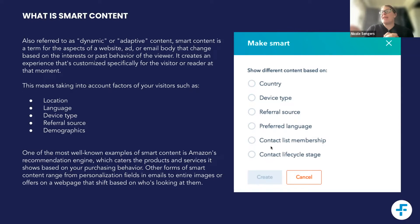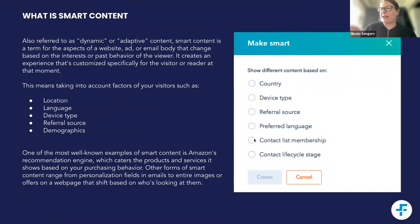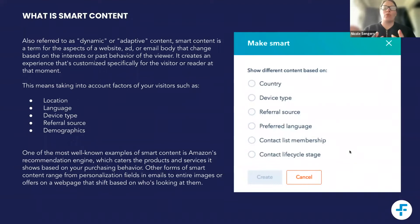So making content smart in HubSpot — how does that actually work? You should recognize this particular block. If you're building a landing page, these are the actual HubSpot landing page criteria for choosing smart content. You can make content smart by country, device type, referral source, language, list membership, and lifecycle stage.